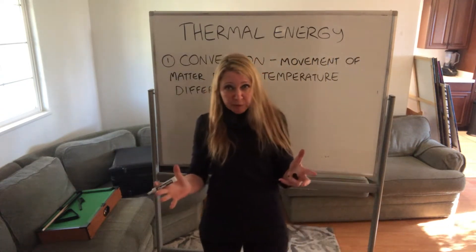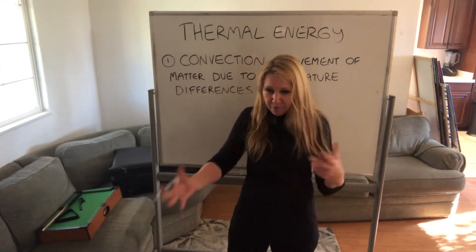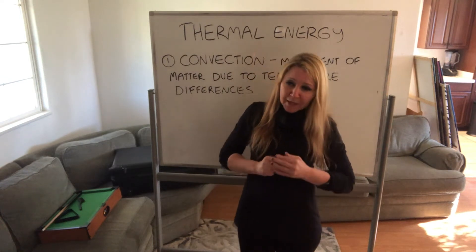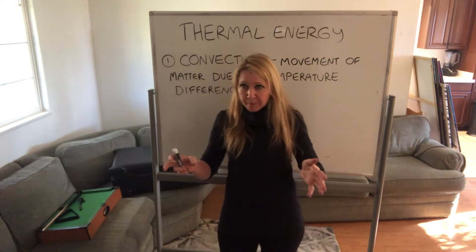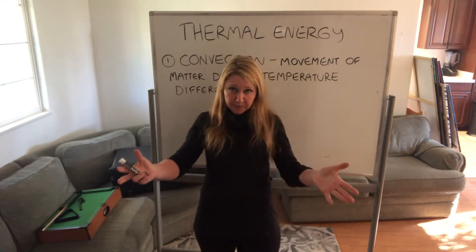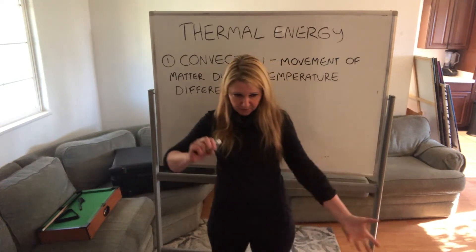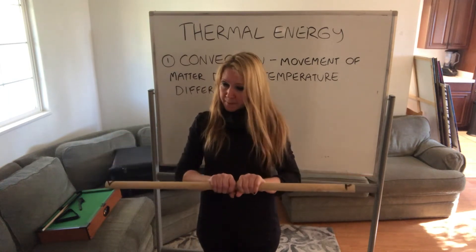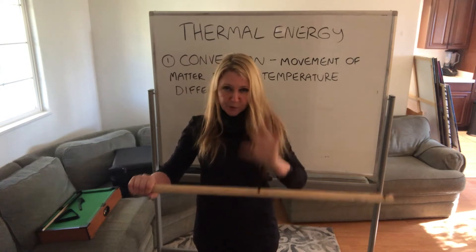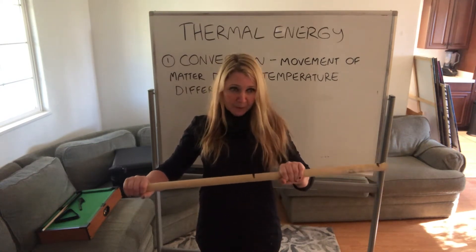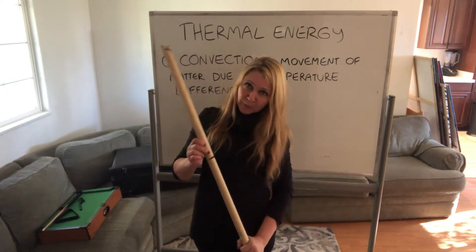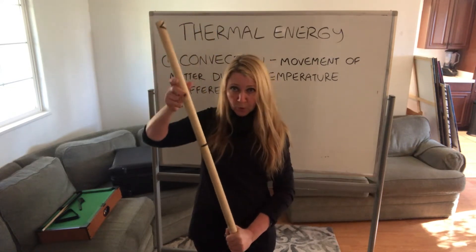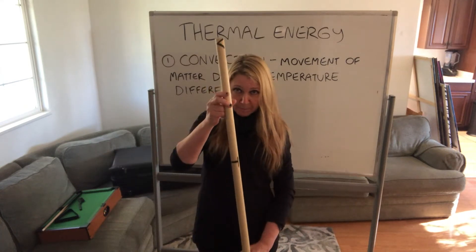So convection — if we think of temperature, remember, it is the average kinetic energy in the atom, how much the average movement of those atoms are. Hot air rises because it's less dense. If we think about the gas laws: we have temperature, volume, and pressure. If we increase the temperature and keep the pressure the same, the volume increases. So there's more space — they spread out. Temperature and volume are directly related.